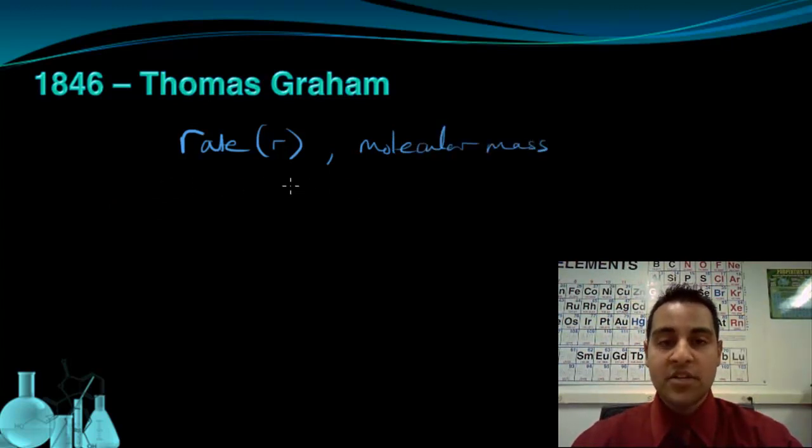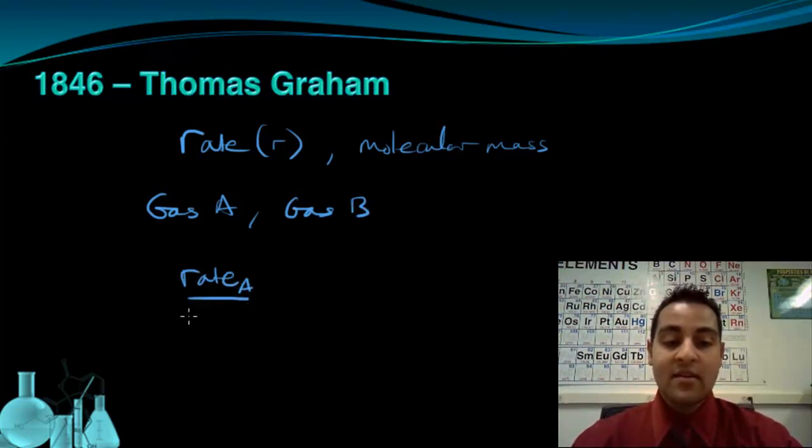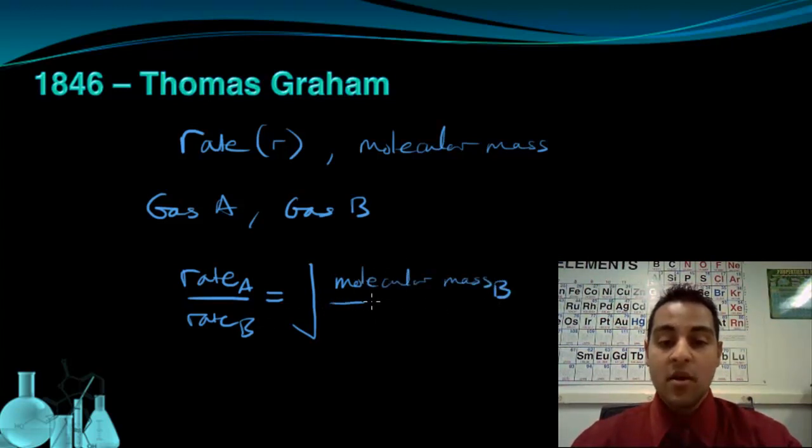We're able to show the relationship between rate and molecular mass by comparing two gases. So if we look at gas A and gas B, then the ratio of the rate of gas A to the rate of gas B is equal to the square root of the molecular mass of gas B, notice it's flipped, over the molecular mass of gas A.